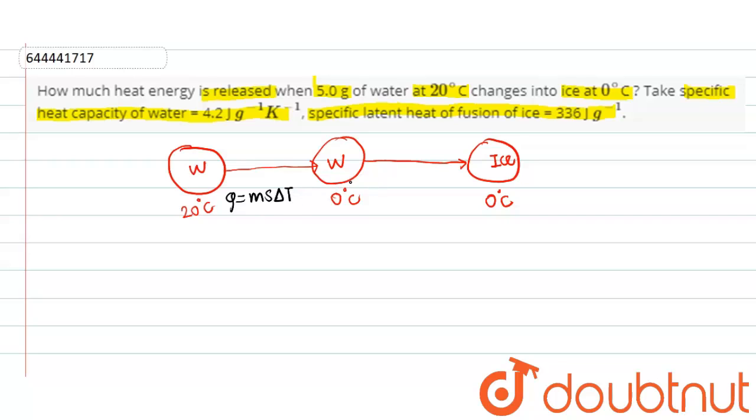And when the water at 0 degree Celsius gets converted into ice at 0 degree Celsius, it releases the heat Q that equals m times L, where L is the specific latent heat of fusion of ice and m is the mass of water that is converted into ice.